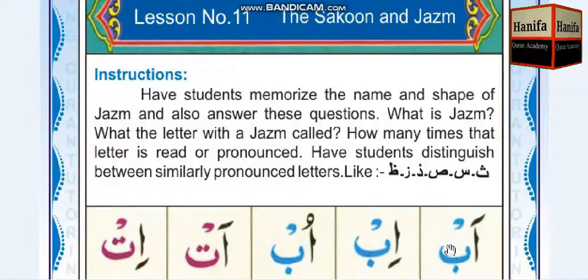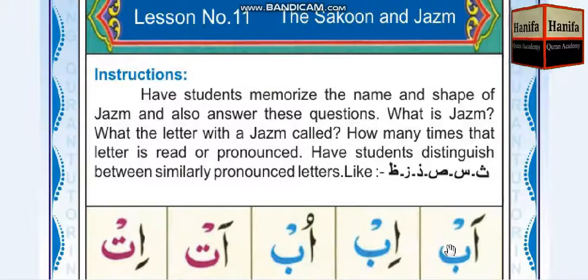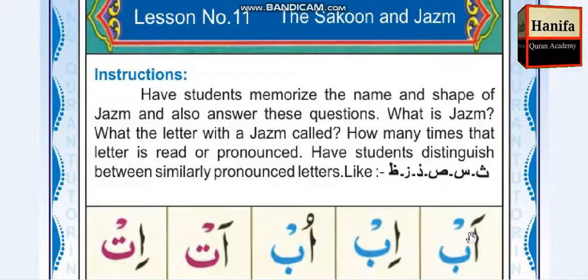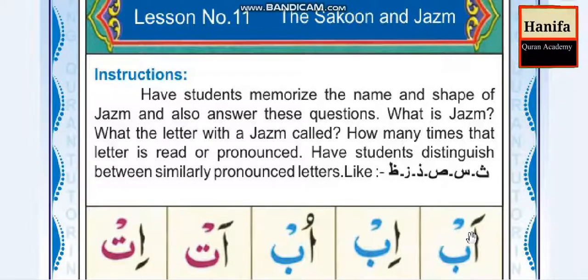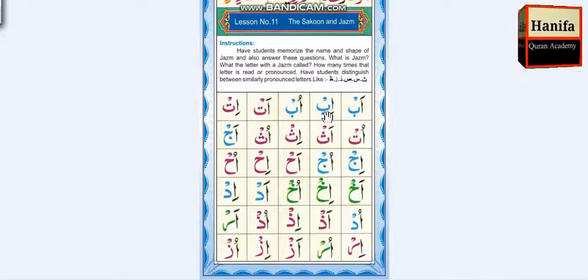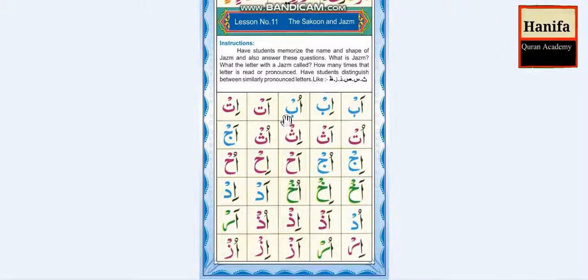Let us practice: Hamza, Ba, Fathah — Ab. Hamza, Ba, Kasra — Ab. Hamza, Ba, Damma — Ab. Hamza, Ta, Fathah — At. Hamza, Ta, Kasra — It. Hamza, Ta, Damma — Ut.